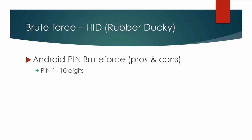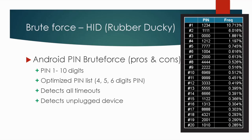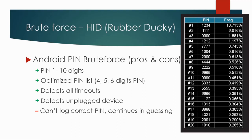The tool has a lot of pros and cons. You can test various PIN lengths from 1 to 10 digits. It uses an optimized PIN list for four, five, and six digit PINs based on the most popular PINs from statistics. It respects all the timeouts. If you need to unplug your smartphone to recharge during a long cracking session, you can unplug, charge the smartphone, plug back in, and it continues where it stopped. One limitation: since it's a HID-connected keyboard, it cannot receive any events from the smartphone, so it doesn't know when the PIN was correct. It will continue guessing and entering other PINs in the list.